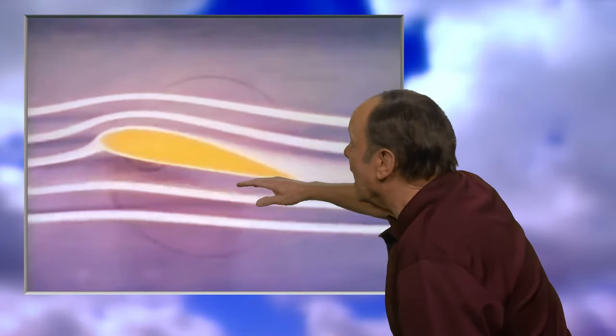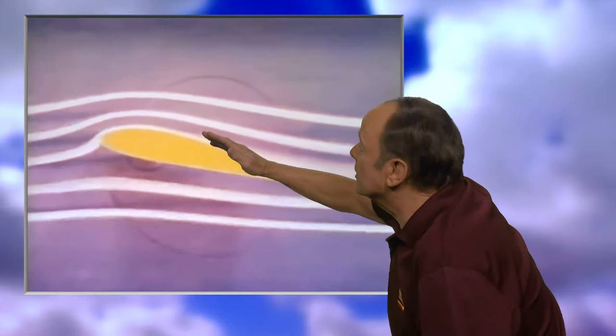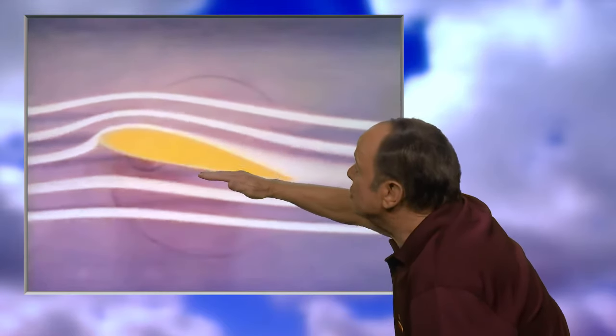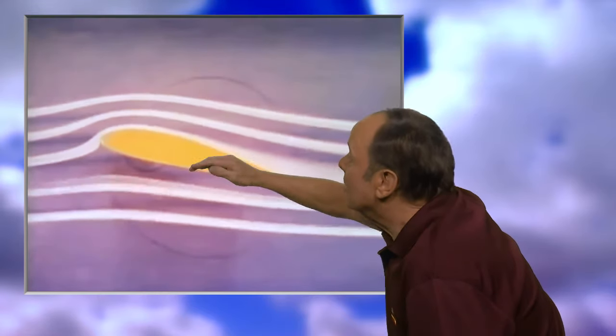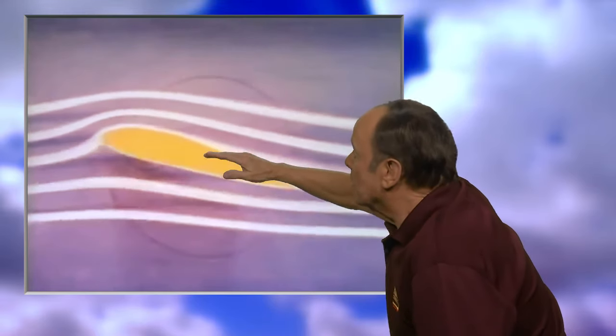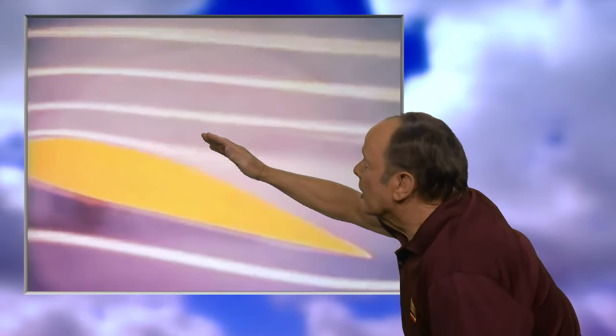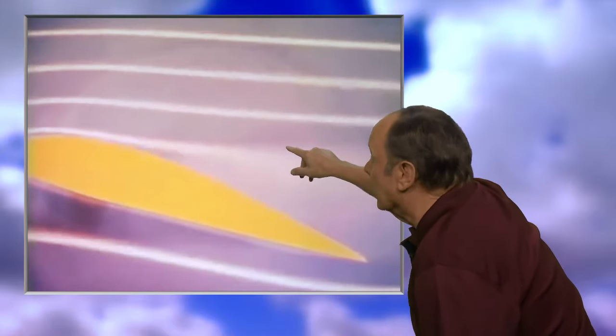Now let's take a look at what happens when you change the angle of attack. As you increase the angle of attack, the lift gets greater. However, there is only lift as long as the air conforms to the surface of the wing. When you get the angle of attack too high, the air can no longer conform to the surface of the wing.